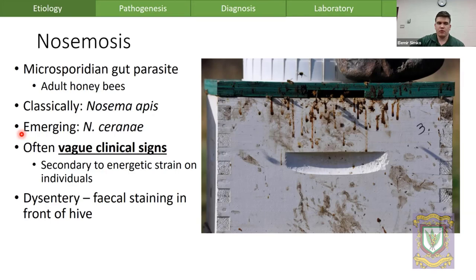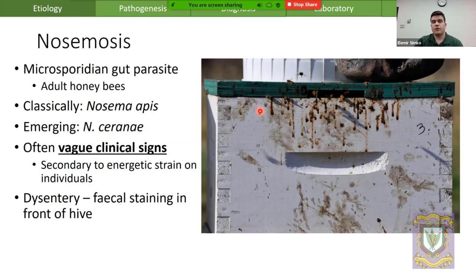With either of these diseases, most often it's just vague clinical signs downstream of the effects on individual infected worker bees. Primarily, these microsporidians are causing energetic strain in adults based on their parasitism. With Nosema apis in particular, one sign frequently associated with infection is dysentery — you can see at the front entrance of a hive drips where bees were unable to leave the colony before defecating both within and in front of the hive.